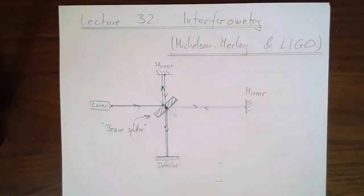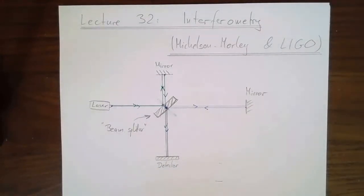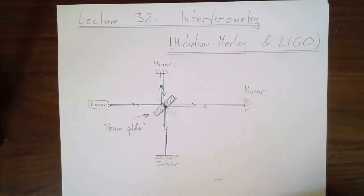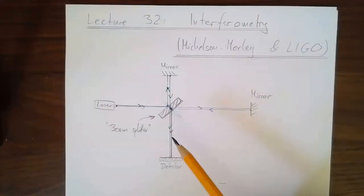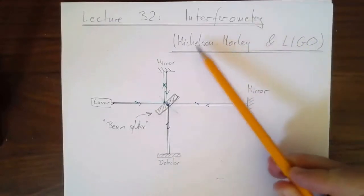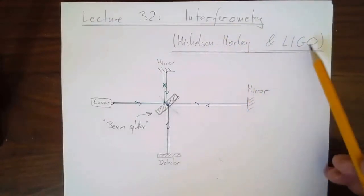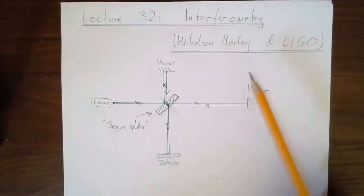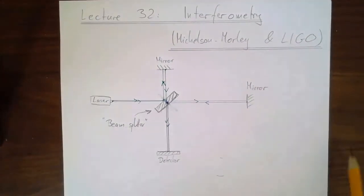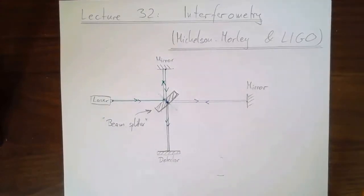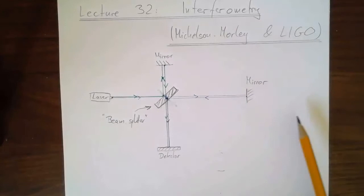Welcome to lecture 32, where we're going to talk about interferometers. An interferometer is a particular setup that has a variety of applications in certain fairly fundamental physics experiments. I'm going to talk about two in particular: the Michelson-Morley experiment and LIGO. This one is from about the 1880s, this one from the 2010s - very different science being explored, but actually a very similar setup.